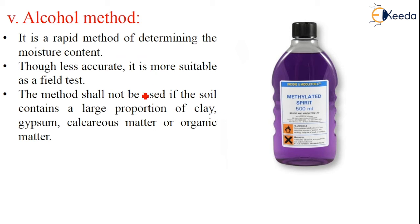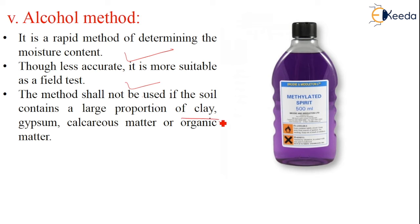The next method is the alcohol method. It is a rapid method for determining the moisture content. Though not very accurate, it is more suitable for a field test because for a field test 100% accuracy is not necessary. This method shall not be used if the soil contains a large proportion of clay, gypsum, calcareous matter, or organic matter. This is a point you have to remember.